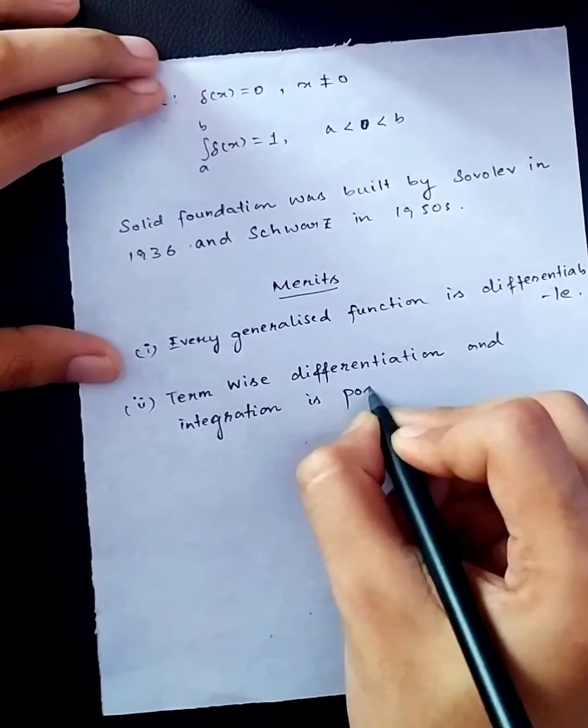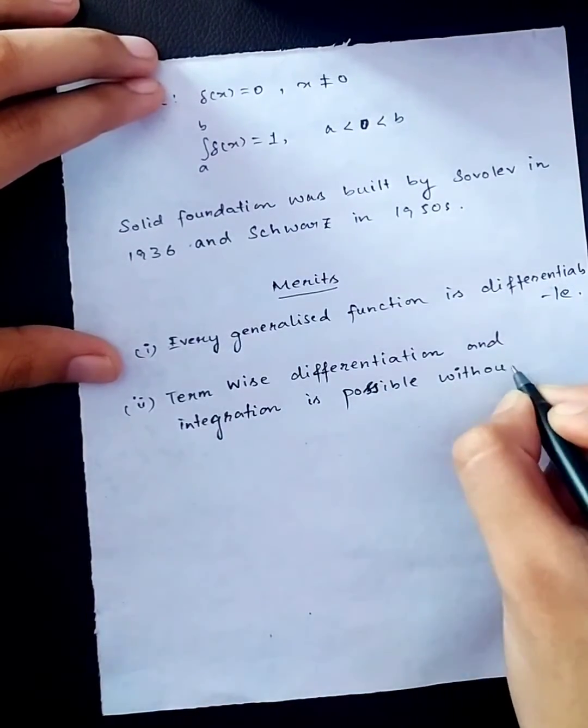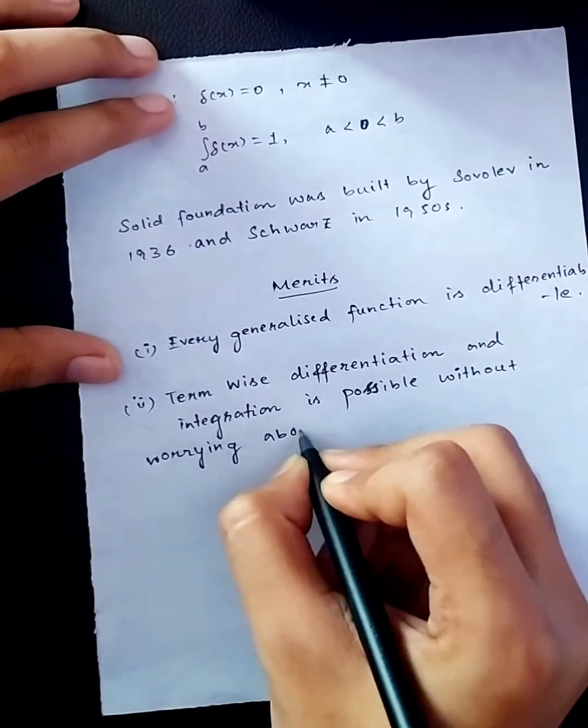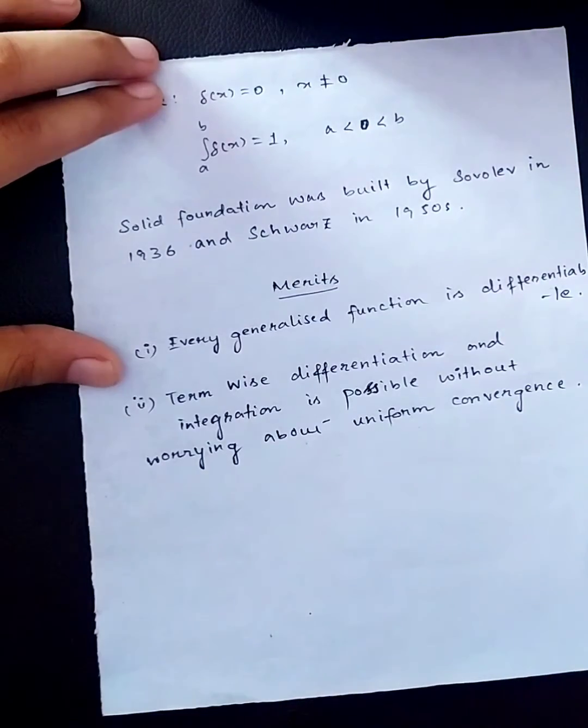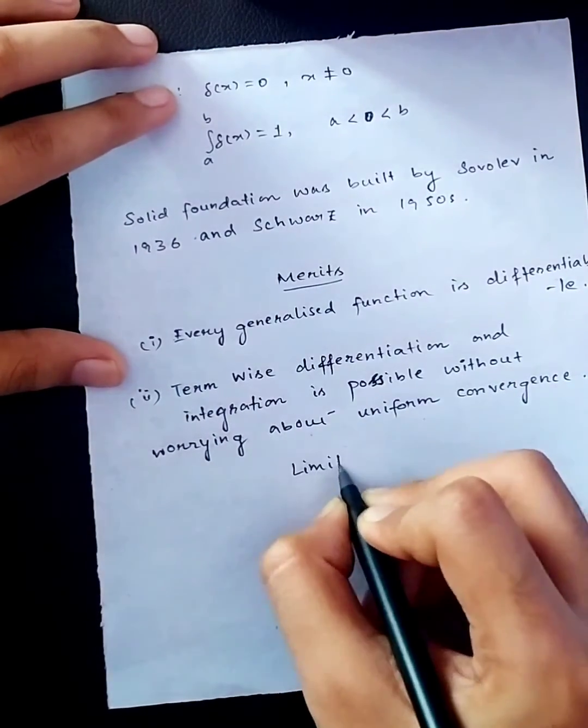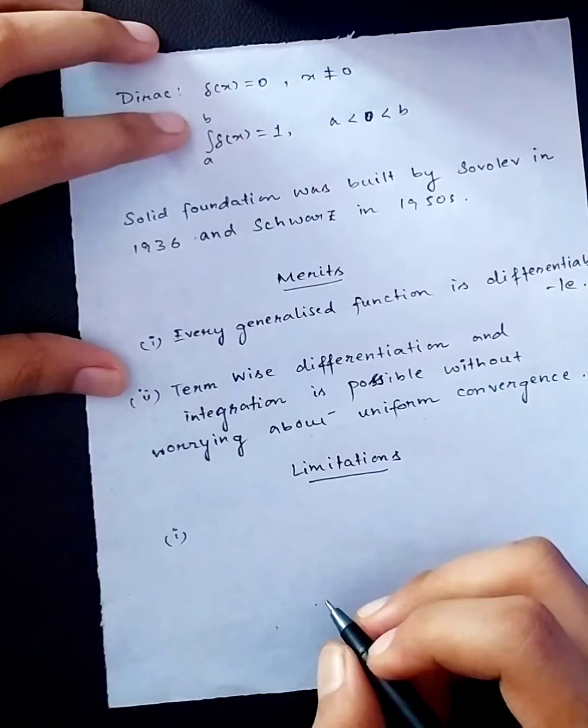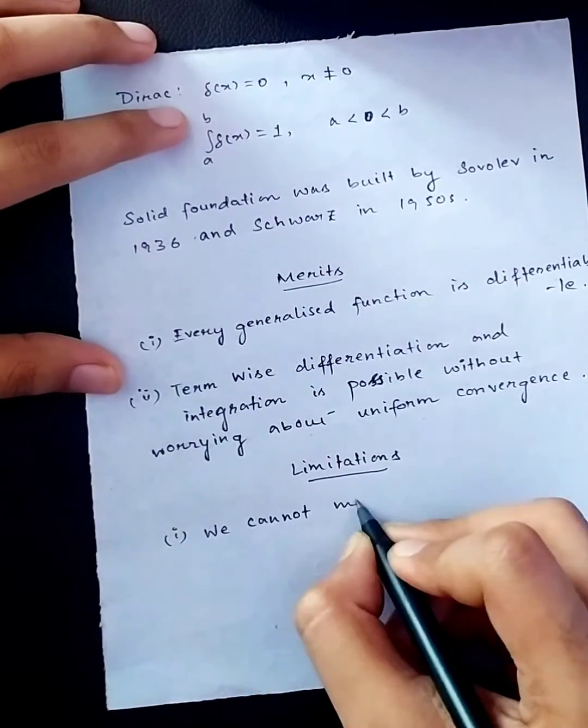But also there comes a price which we have to pay for defining and developing such functions. Now if you are still confused with generalized functions, you can think of them as ordinary functions with some additional properties. One such basic difference is that an ordinary function maps numbers to numbers, but a generalized function maps functions to some particular number.